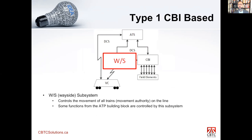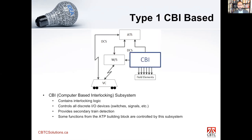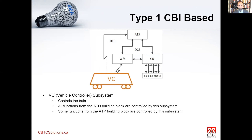The wayside controls the movement of all trains — it issues movement authorities, it's aware of all trains in the system, and ensures they are properly separated. Some ATP functions are covered by the wayside. The CBI, or computer-based interlocking system, contains all the interlocking logic — it typically uses conventional fixed block principles to control interlocking logic, controls all discrete I/O devices like switches and signals, and provides secondary train detection. The CBI also handles some aspects of the ATP building block.